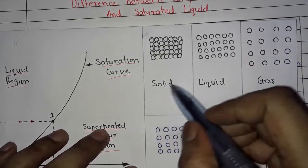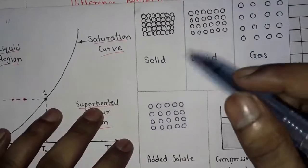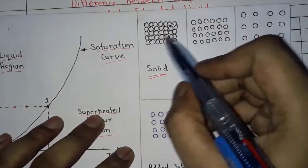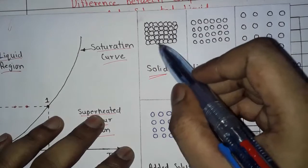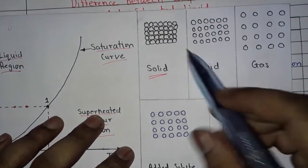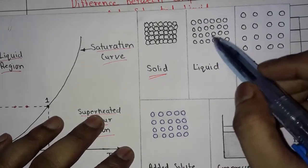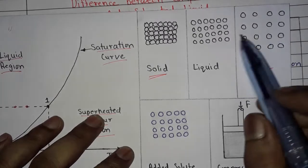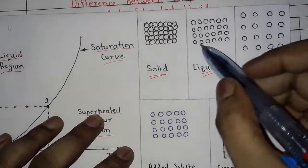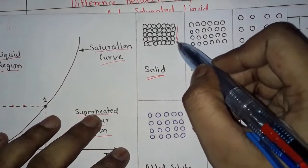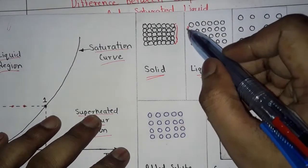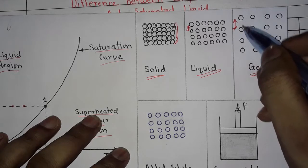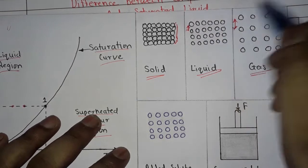The intermolecular space between solid molecules is much lesser — in the solid case, molecules are much closer with very little space between particles. In liquid, as compared to solid, there is more intermolecular space. In gas, there is even more intermolecular space compared to liquid molecules. In the diagram, solid molecules are closely spaced, liquid molecules are less closely spaced, and gas molecules are very far apart compared to liquid molecules.